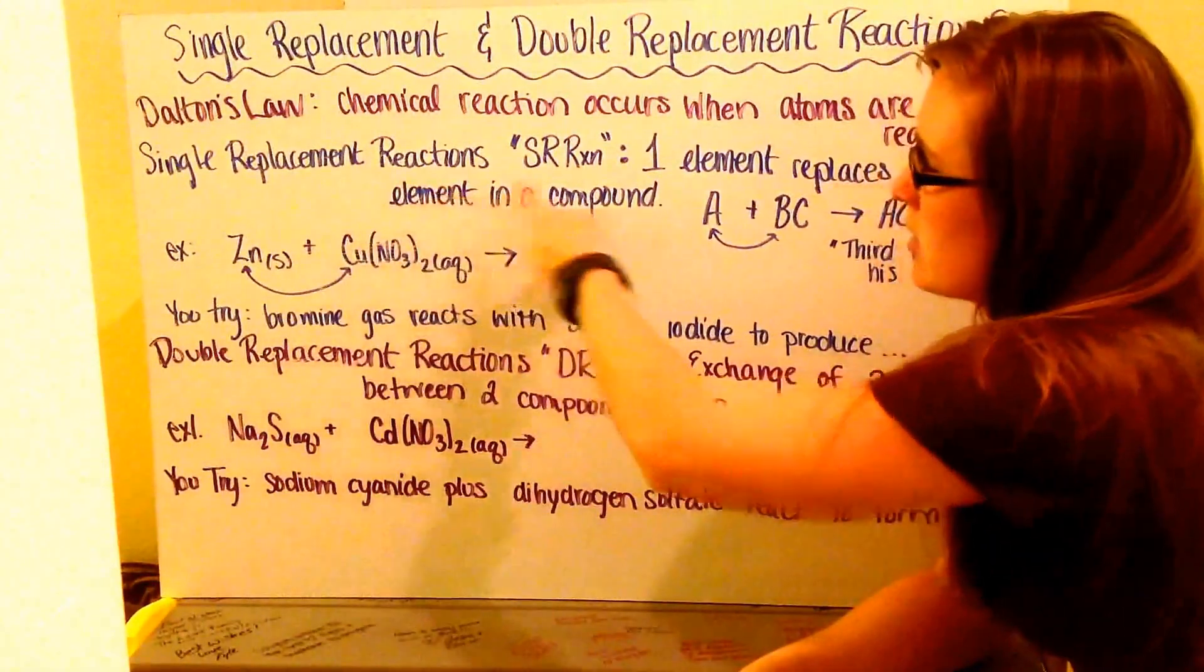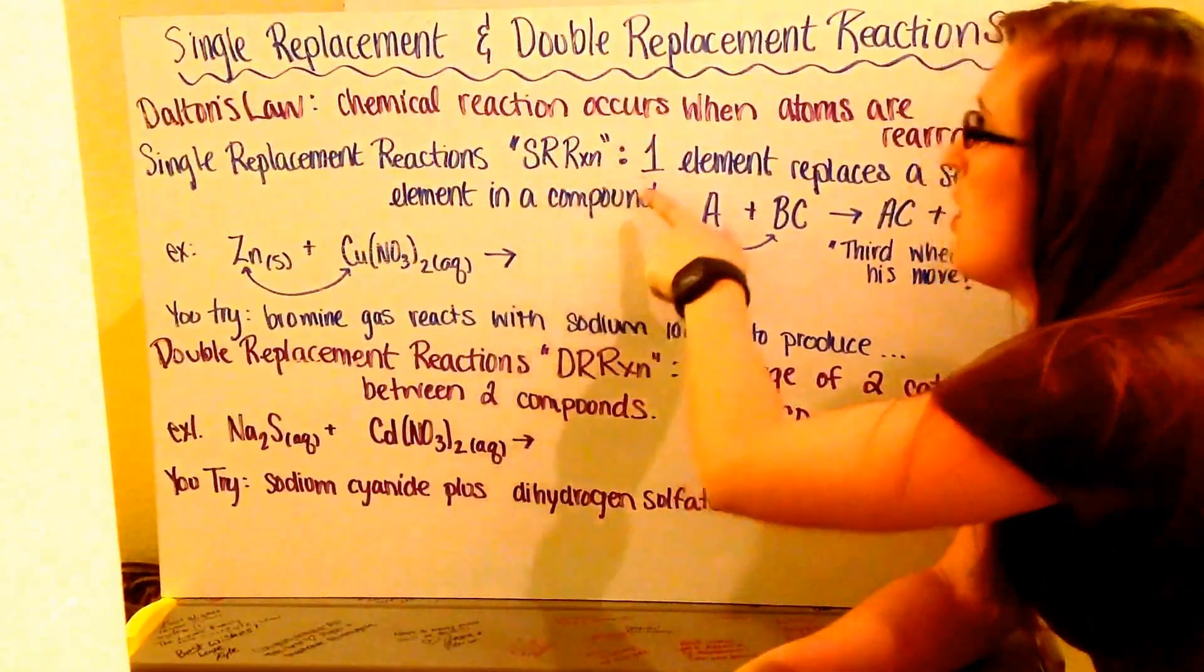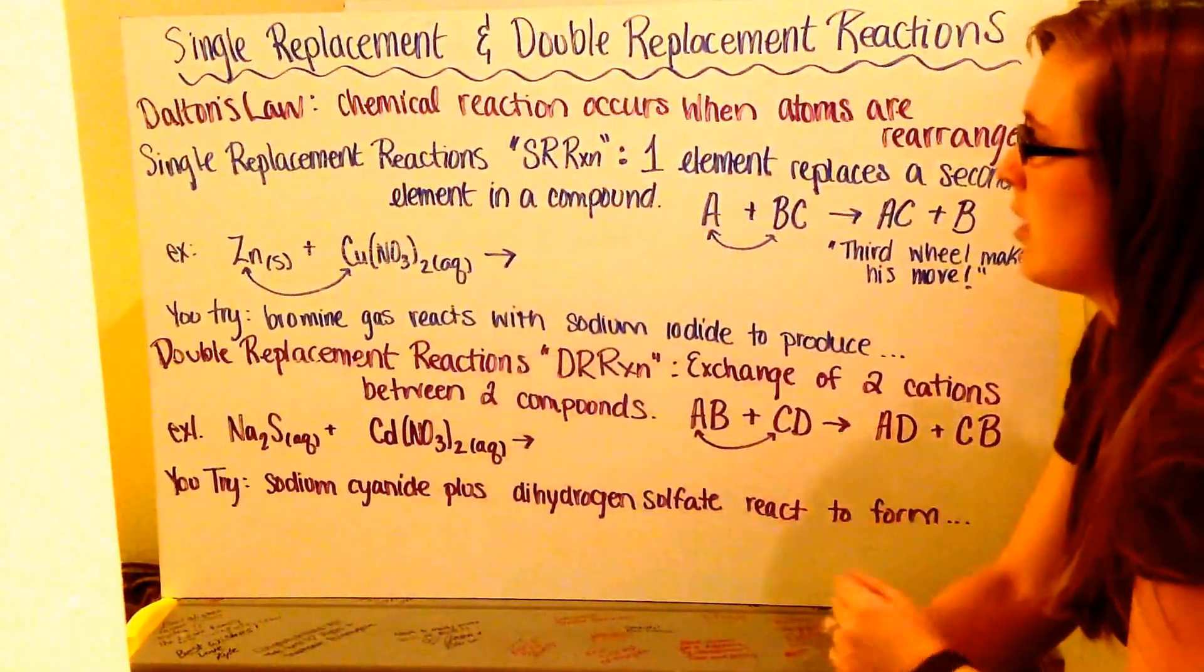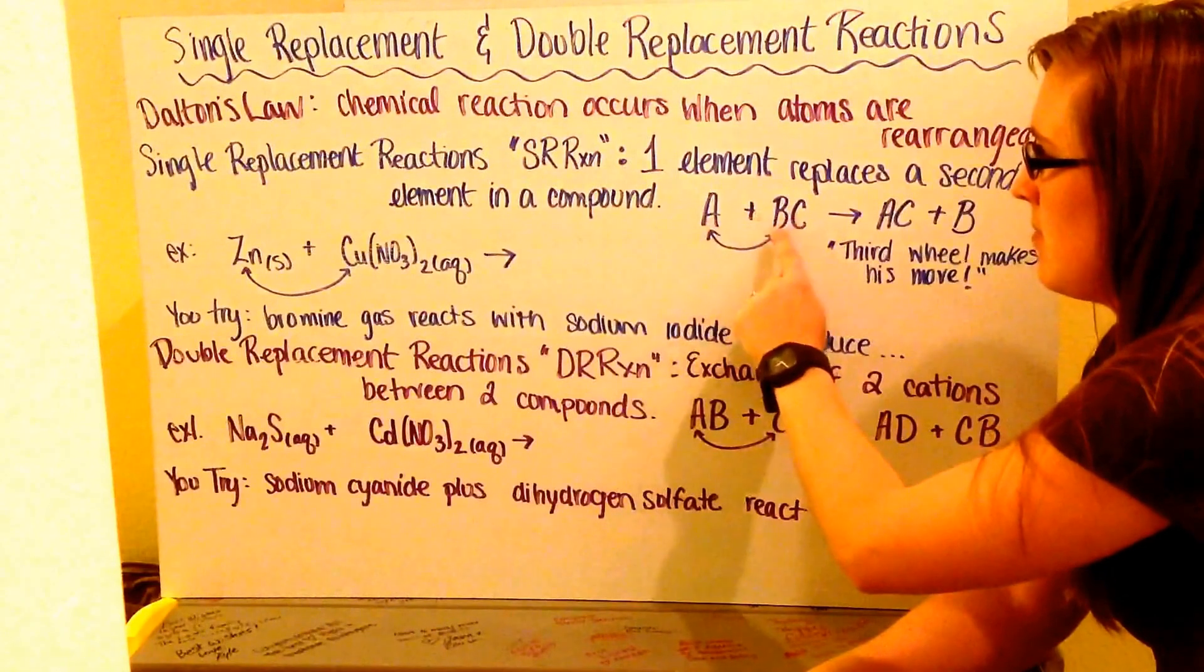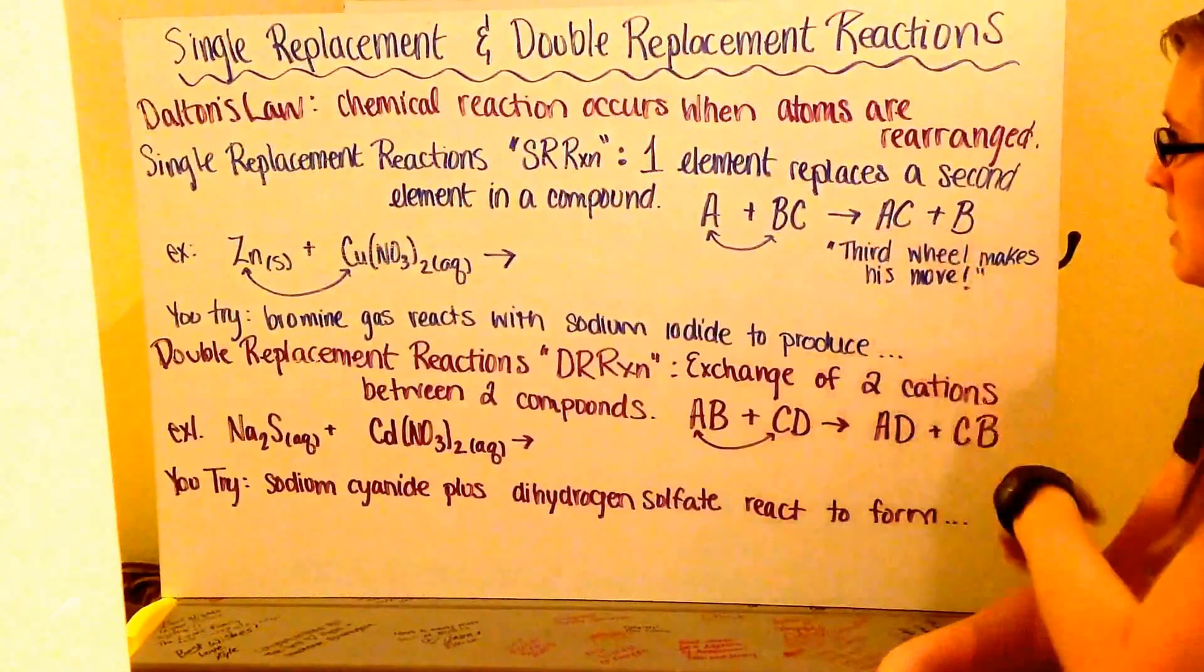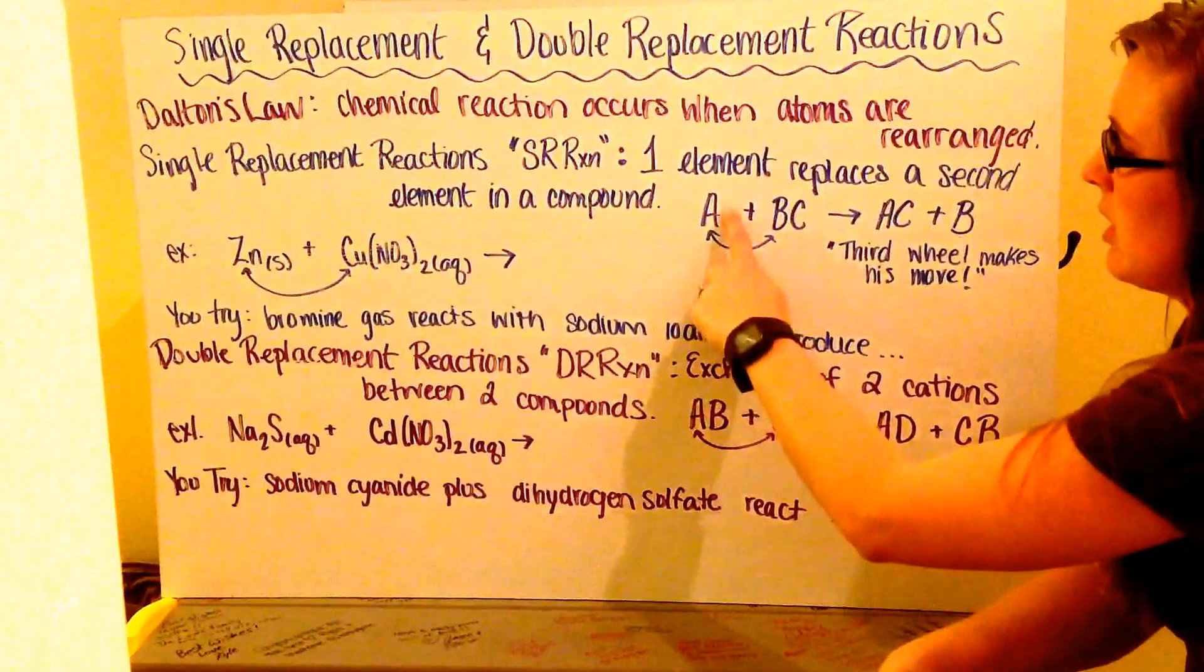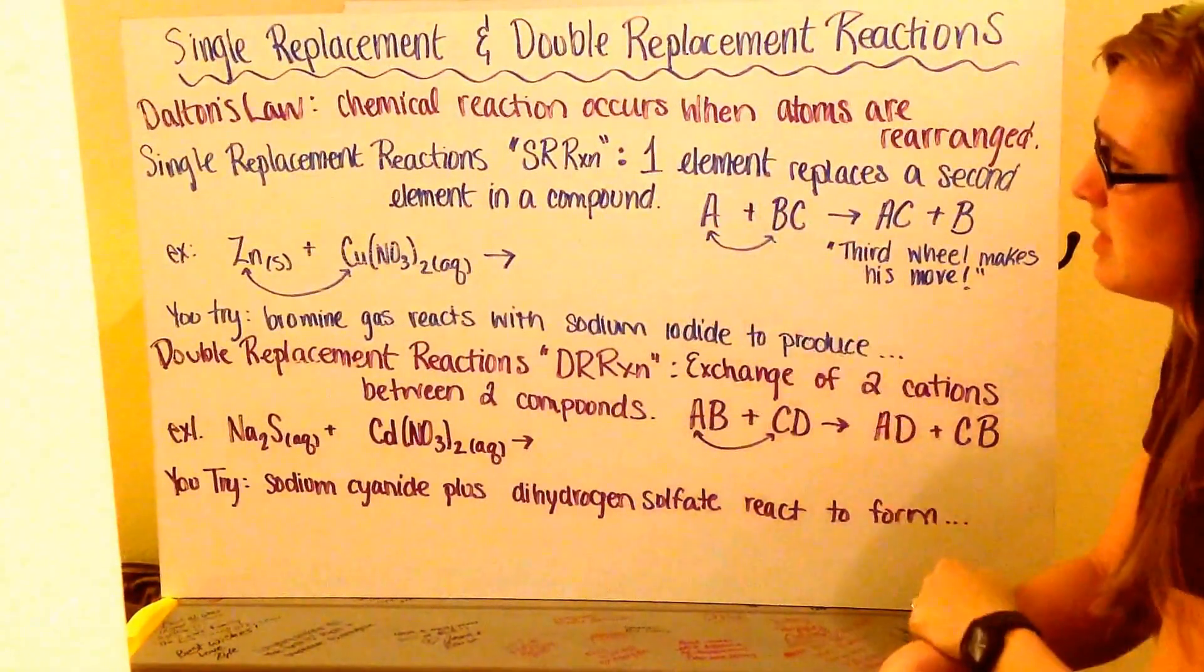In a single replacement reaction, abbreviated as SR, Rxn stands for reaction. One element replaces the second element in a compound. So, I write up my generic form of A, my single element, and then BC is my compound. A is going to replace B to make a new compound, AC, plus B. Here's like my third wheel finally makes his move. Here's my third wheel and the couple, and he's going to butt in and steal the person away.